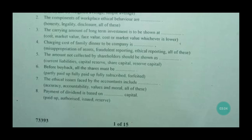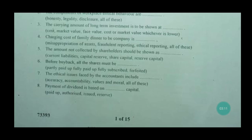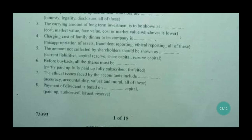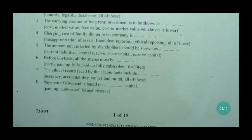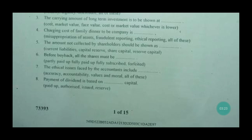Charging the cost of a family dinner to a company is misappropriation of assets, fraudulent reporting, ethical reporting, or all of these — the answer is misappropriation of assets. The amount not collected by shareholders should be shown in current liabilities, capital reserve, share capital, or reserve capital — the answer is current liabilities.